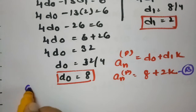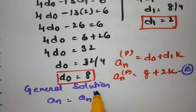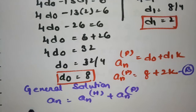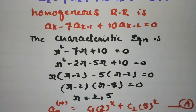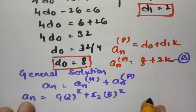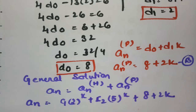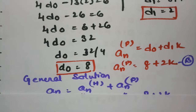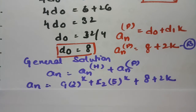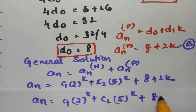The general solution is An = An(H) + An(P) = C1·2^k + C2·5^k + 8 + 2k. Now we apply the given initial conditions to find C1 and C2.